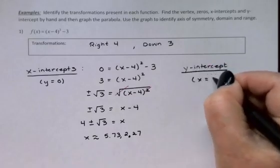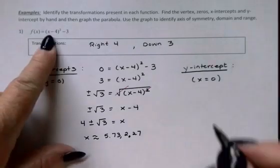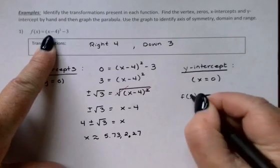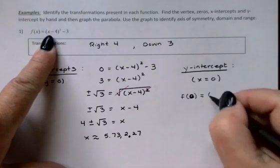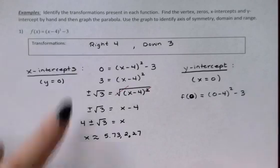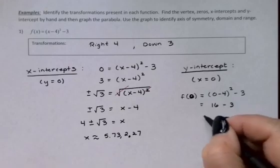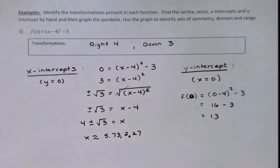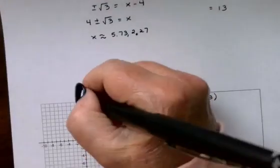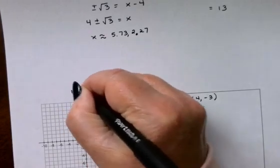For the y-intercept, we plug in x = 0. So back to my original function. I would get f(0) = (0 - 4)² - 3. -4 squared is 16 minus 3 would be 13. So on my picture down here, I'm just going to add a little bit of extra space. About 11, 12, 13 would be around there.